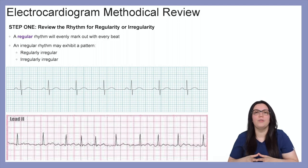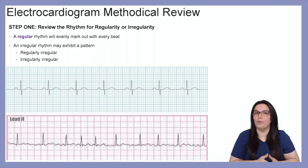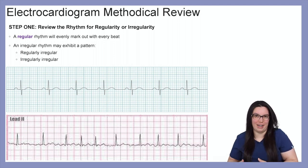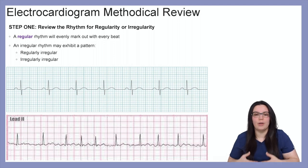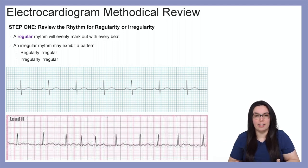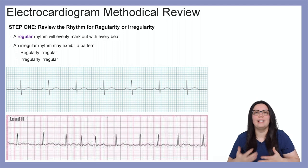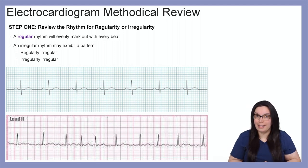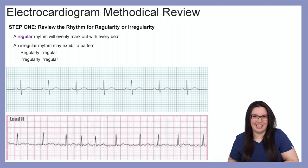Step one: review the rhythm for regularity or irregularity. A regular rhythm will evenly march out with each R wave. An irregular rhythm, as seen in example two, will exhibit a pattern — it can either be regularly irregular or irregularly irregular.